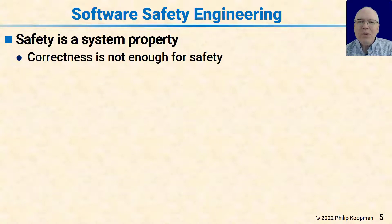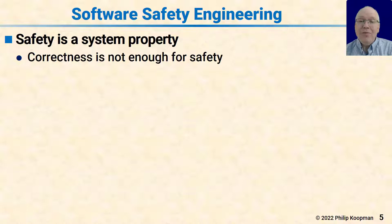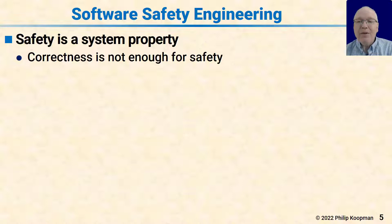Let's start with some basics. What's software safety engineering? Safety is a system property — it's beyond just correct code. It's really nice to have correct code, and if you have bugs in your code it's going to be difficult to get safety for sure, but just having perfectly written code that exactly meets the requirements does not necessarily get you to safety.